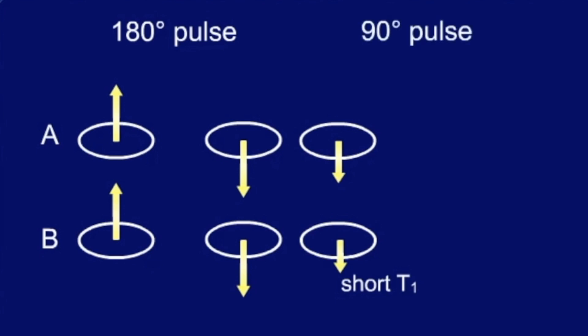After the 90-degree pulse we can measure and receive the new transversal magnetization, which in this example is less for tissue B with the shorter T1. The signal that we get depends on the time between the 180-degree and the 90-degree pulse.